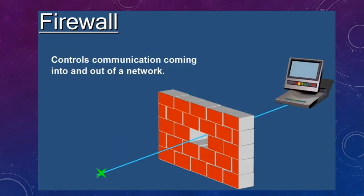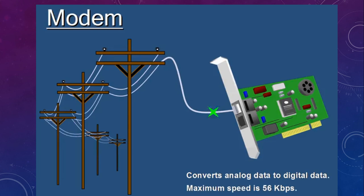Then we have firewalls. They are of two kinds: software and hardware firewalls. They control communication coming into and out of a network, so we can decide what kind of data should enter our network and what kind of data should go out, using the firewall.